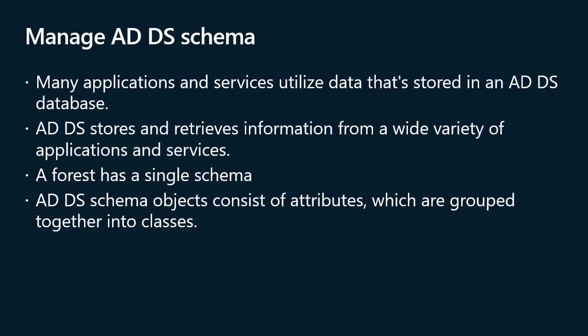An ADDS schema is the component that defines all of the object classes and attributes that ADDS uses to store data. All domains in a forest contain a copy of the schema, and any change replicates to every domain controller in the forest via their replication partners, though changes originate at the schema master. ADDS uses objects as units of storage; the schema defines all object types. Each time the directory manages data, it queries the schema for an appropriate object definition, creates the object, and stores the data. Object definitions specify both the types of data objects can store and the data syntax — you can only create objects that the schema defines.